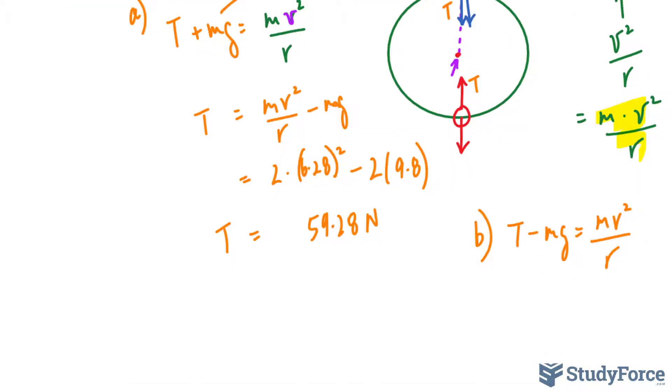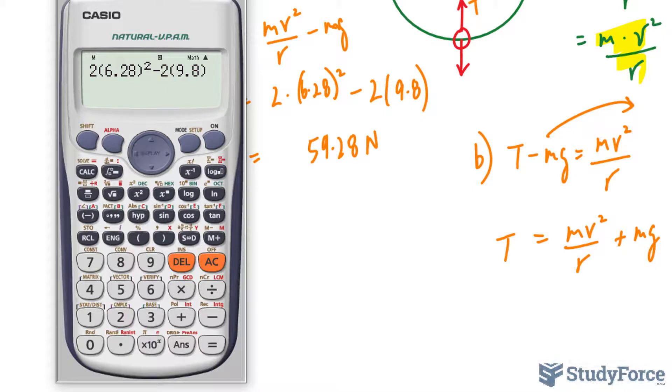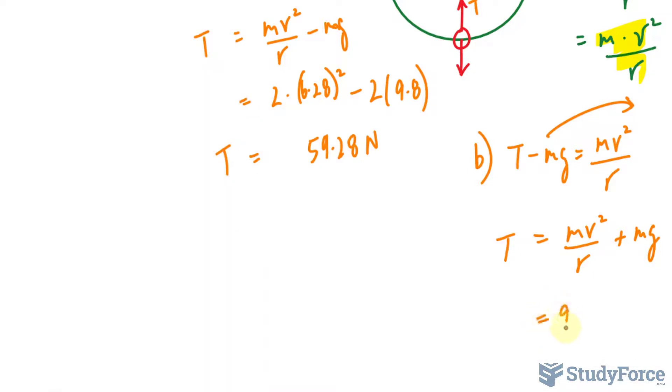Doing the exact same calculation, except that when you move this thing over, it becomes positive. So we have T is equal to mv squared over r plus mg. And like I said, doing it all over again, all I have to do is replace this with plus, and now we get a tension of 98.48 newtons.